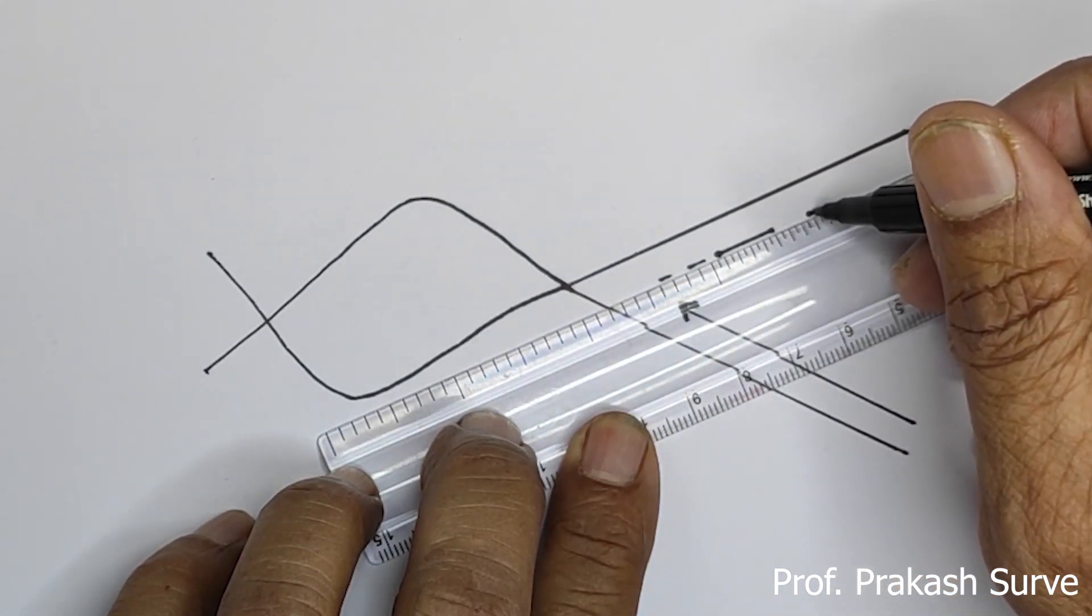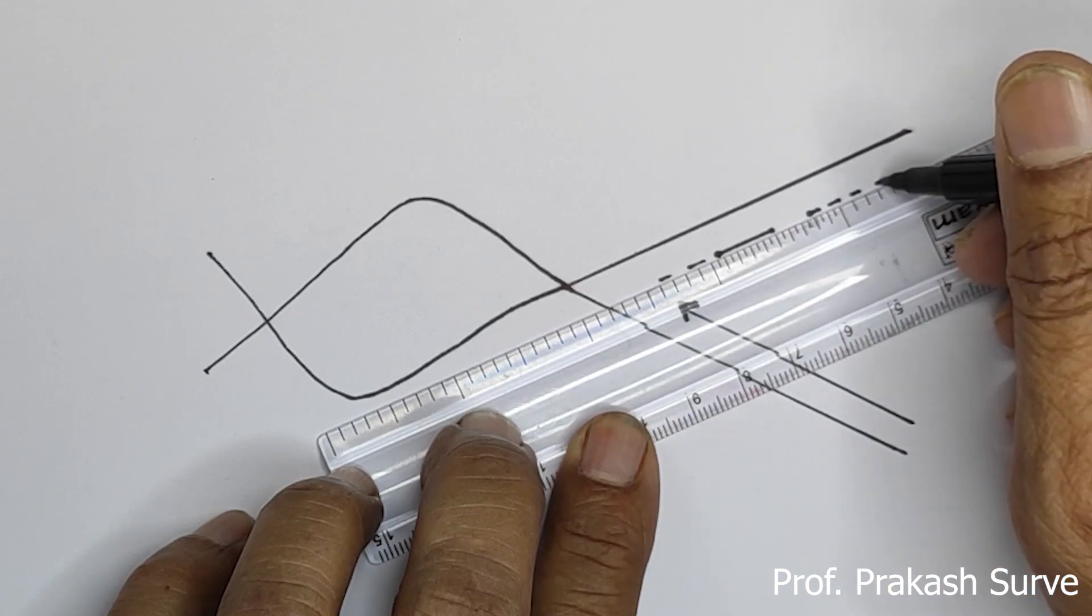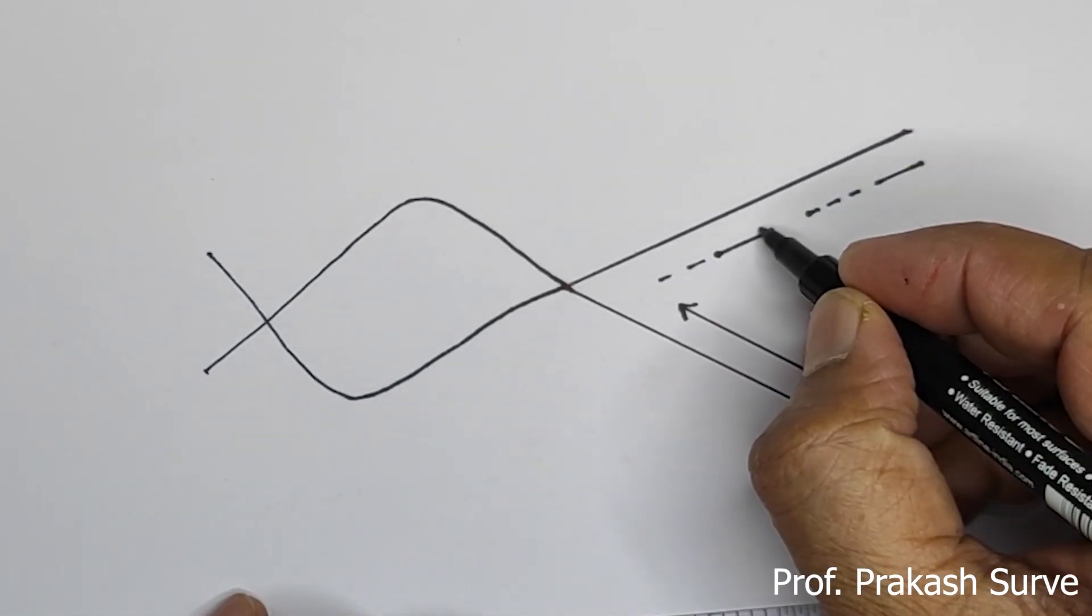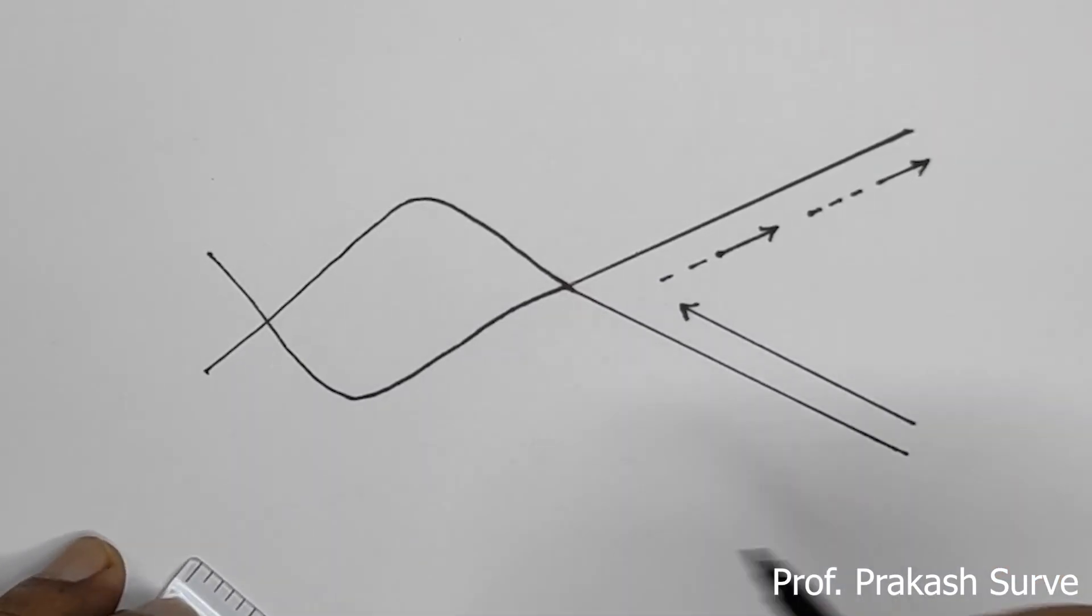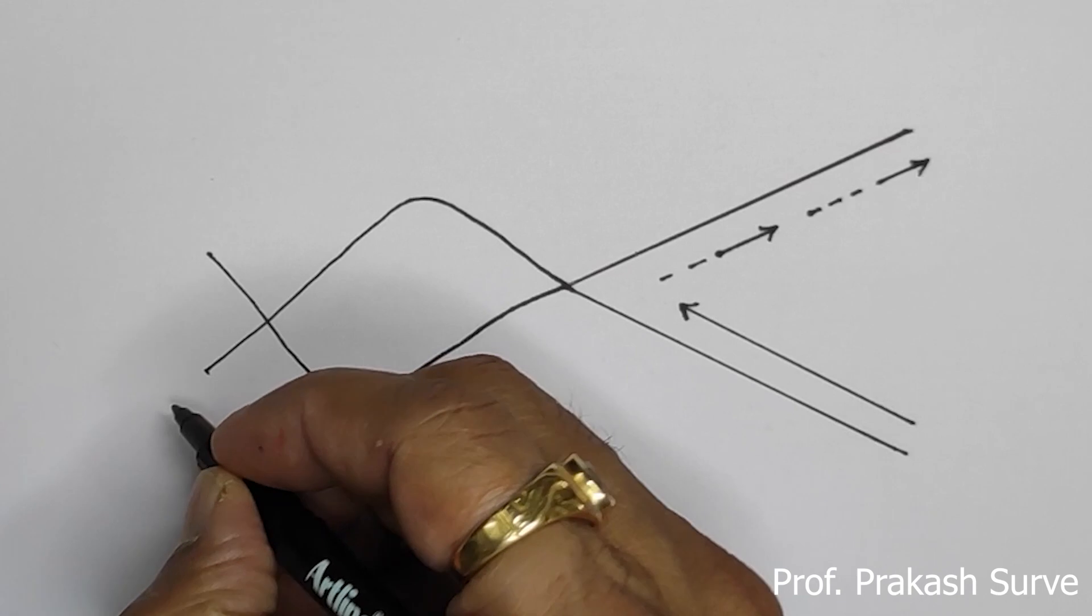Same way here one more, like the arrow like that. So this very simple diagram what we got, that is about the replication fork.